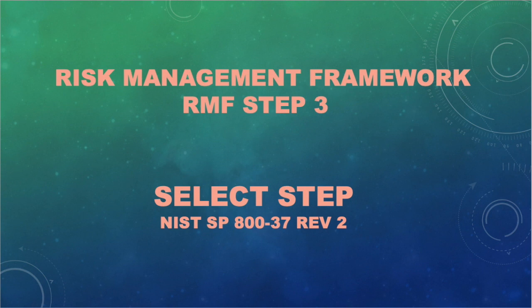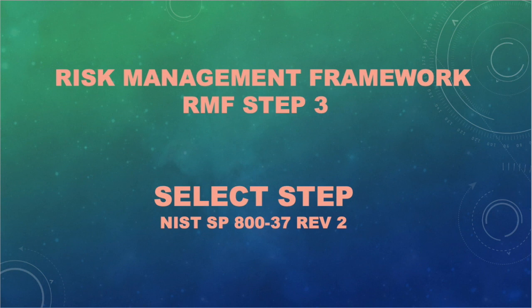As we all know, the Risk Management Framework has seven steps, and the Select step is the third step. In this video I want to share what are the newly updated security control families that have just been added. In our previous video covering NIST 800-37 Revision 1, there were 18 control families, but now according to Revision 2 there are 20 control families. I also want to explain the tasks in this newly updated NIST publication.